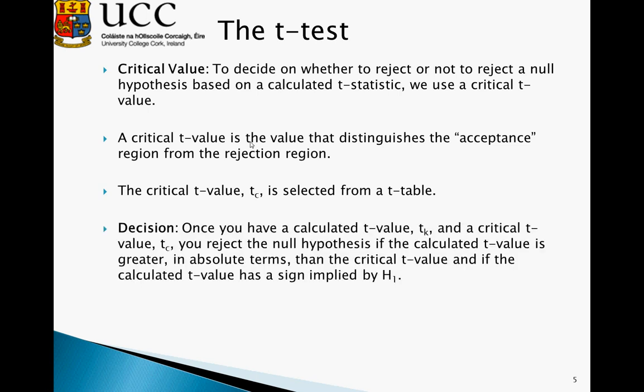Once we have this t-value and t-critical value, we can make a decision. Essentially, we reject the null hypothesis if the calculated t-value is greater in absolute terms than the critical t-value and if the calculated t-value has the sign implied by H1.